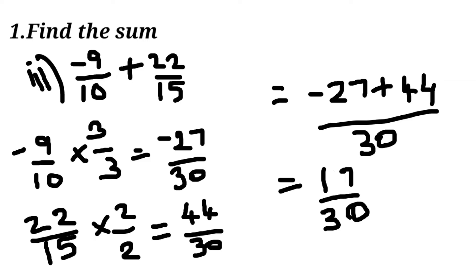Third sum: minus 9 by 10 plus 22 by 15. Here LCM is 30 and then we multiply by 3 and 2 and we get 17 by 30.